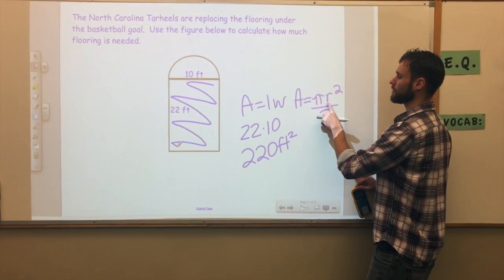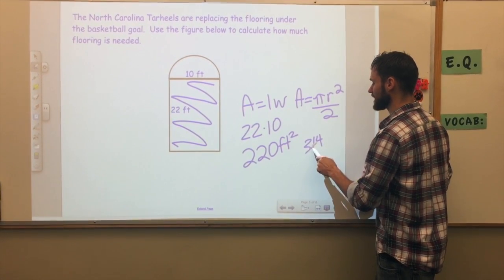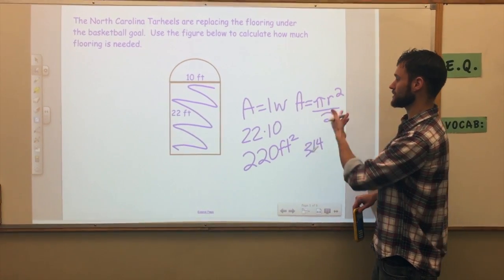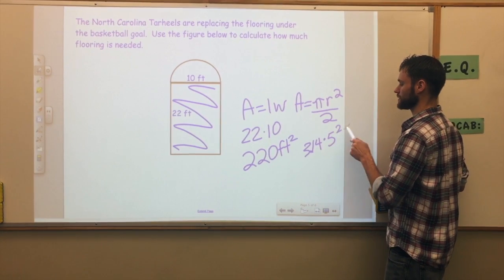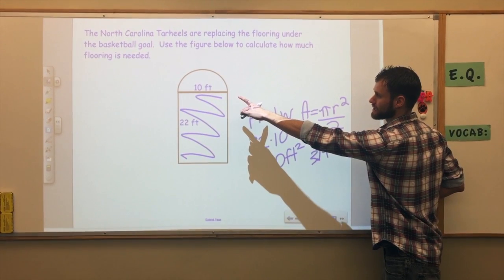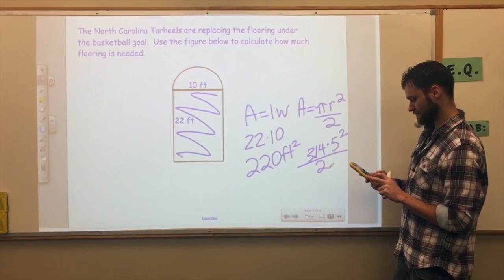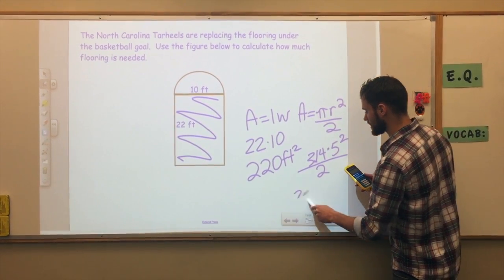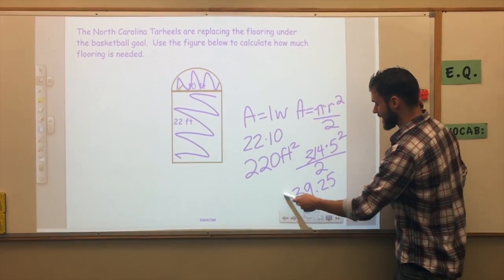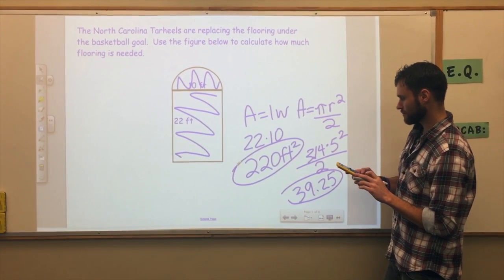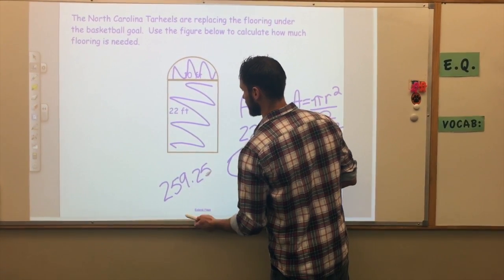For the semicircle the formula is pi times r squared divided by 2. I'll use 3.14 for pi because the diameter of 10 is not a multiple of 7. The radius is half the diameter, so radius equals 5. So: 3.14 times 5 squared divided by 2 equals 39.25 feet squared. That tells me how much room it takes to fill the semicircle.